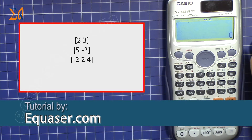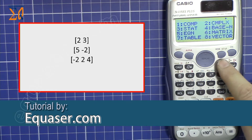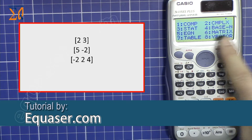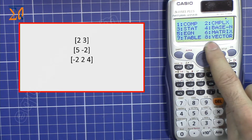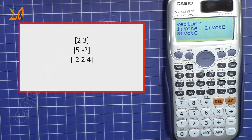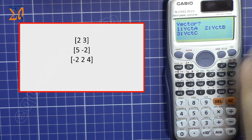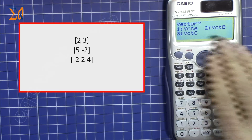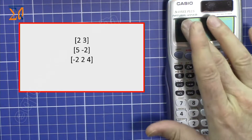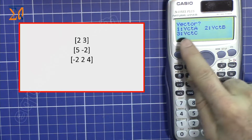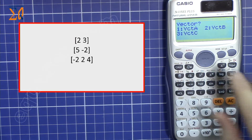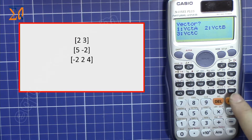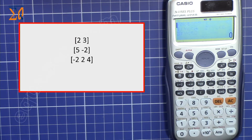To do the vector calculation, press the mode button and then select number eight, which is vector. When you press that, a screen will come up — it may sometimes disappear, so don't panic.